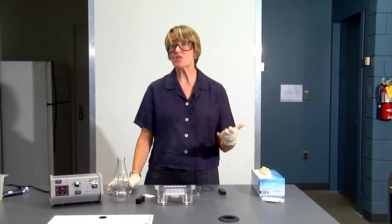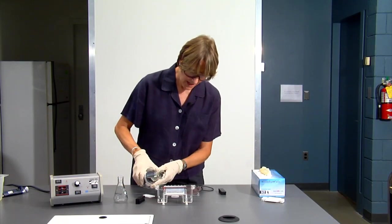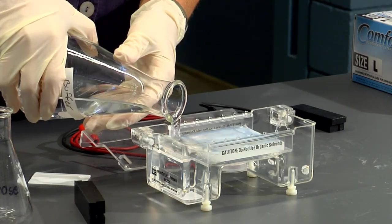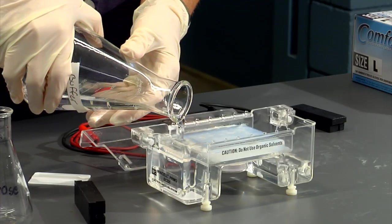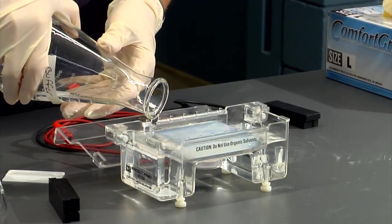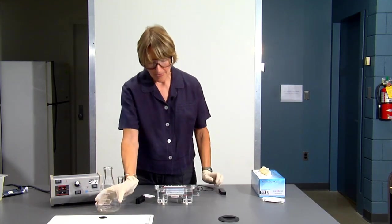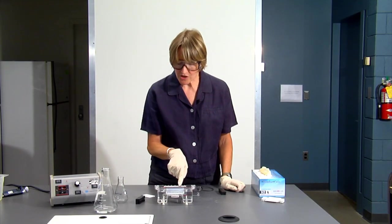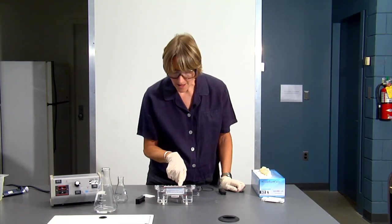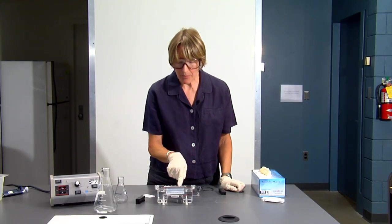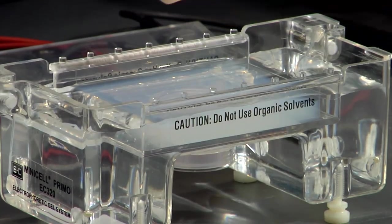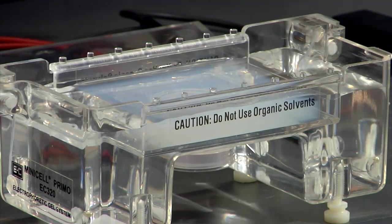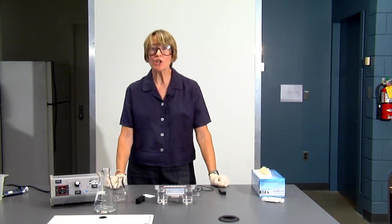Now we're ready to add our running buffer. Take your solution of running buffer and pour it into the gel box, completely covering your gel and making sure you have buffer in both of the reservoirs. The other thing you want to make sure of is that your wells, which are going to contain your samples, are completely covered. You don't want to see any pucker marks over the wells. Now you're ready to load your sample.